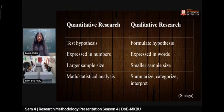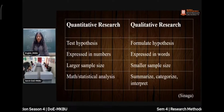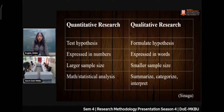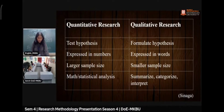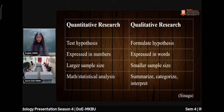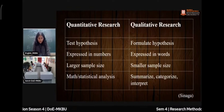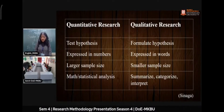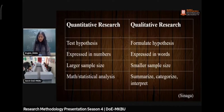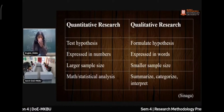Quantitative research uses a larger sample size, while qualitative research works with a smaller sample size — going from individual to group level. Math and statistical analysis falls under quantitative research, whereas summarizing, categorizing, and interpretation are associated with qualitative research.